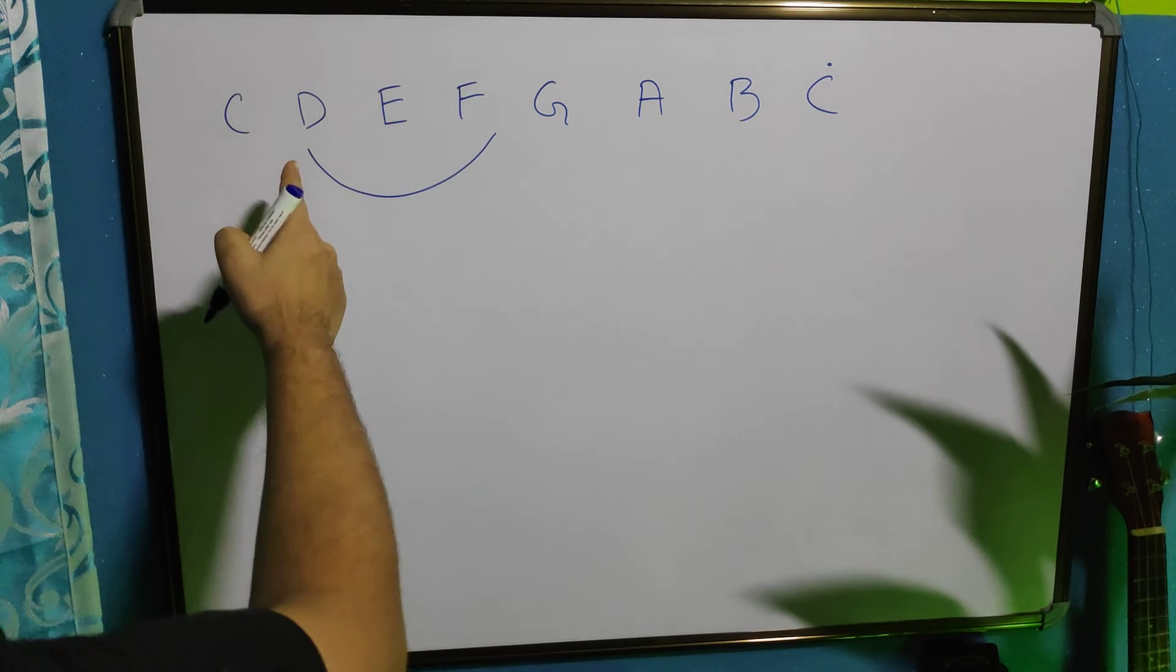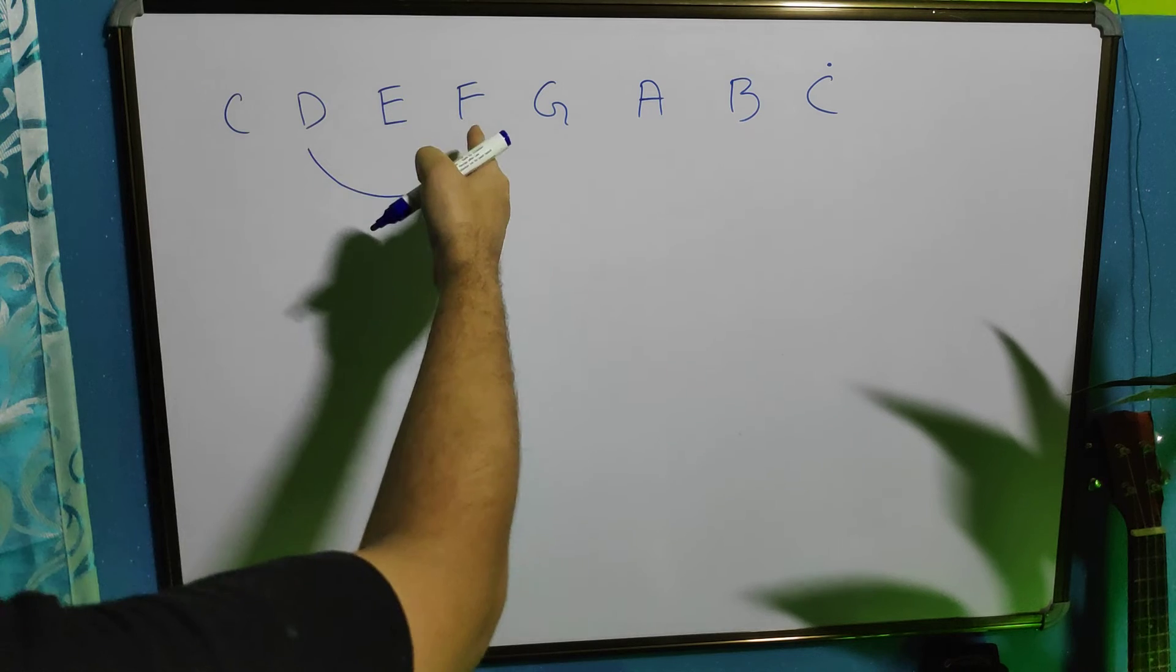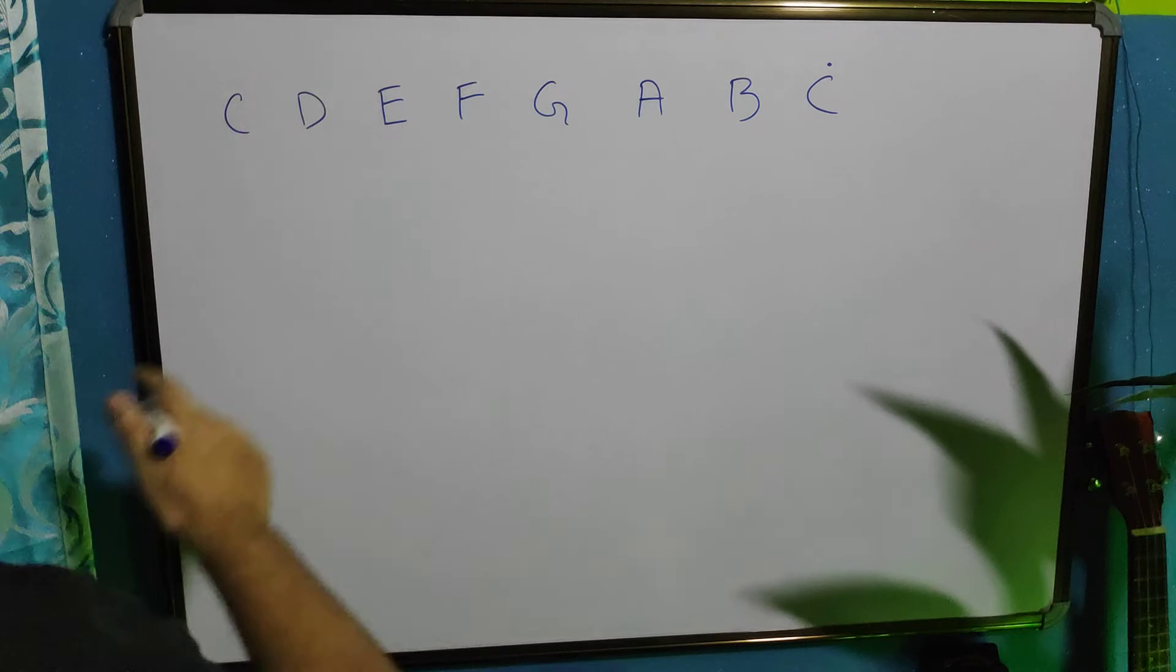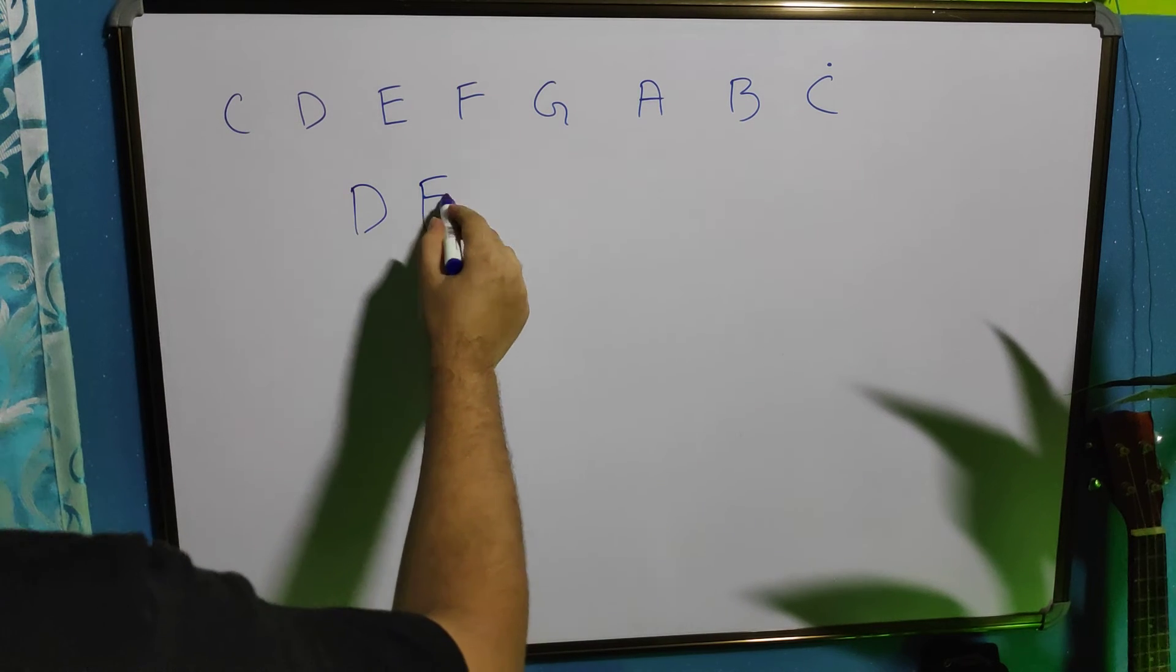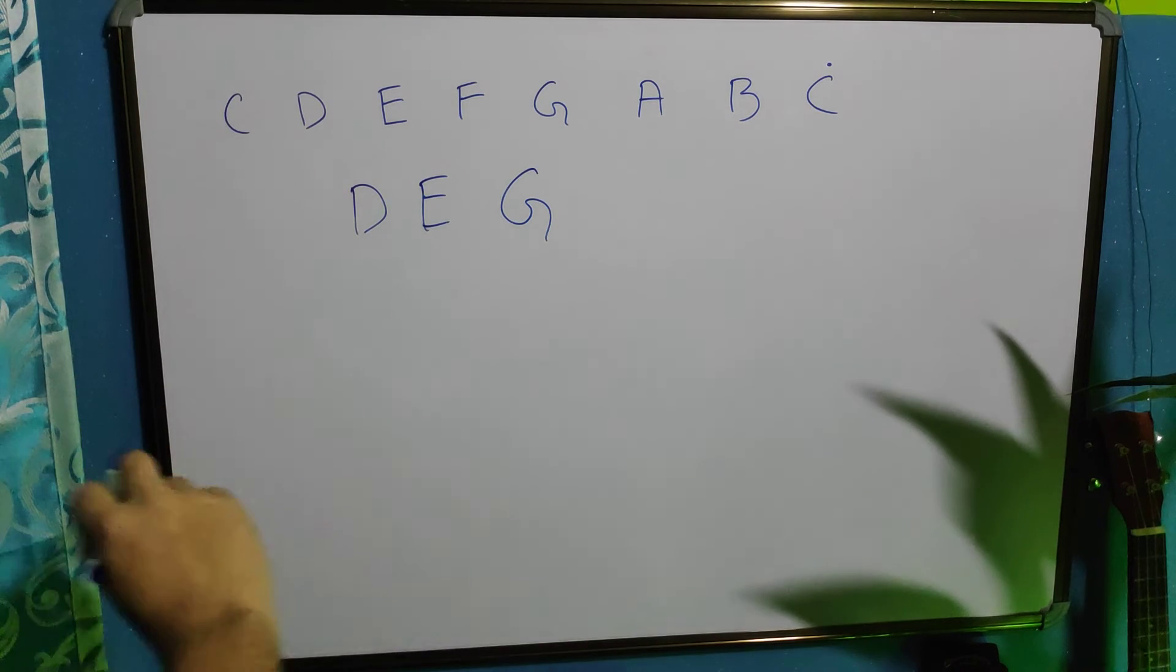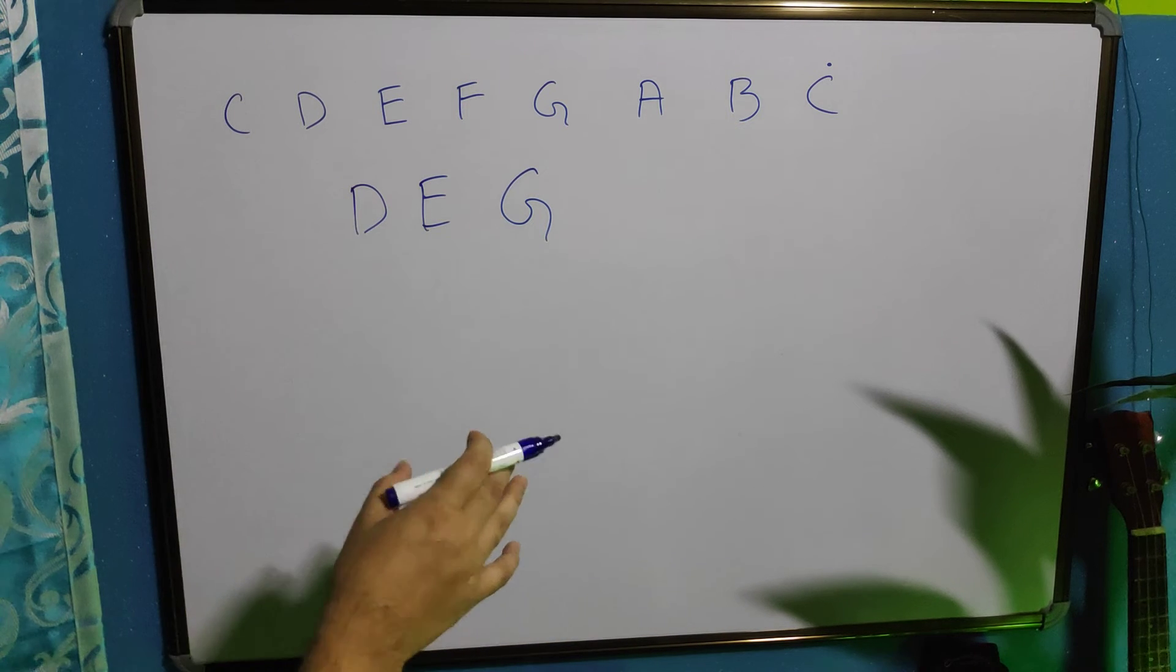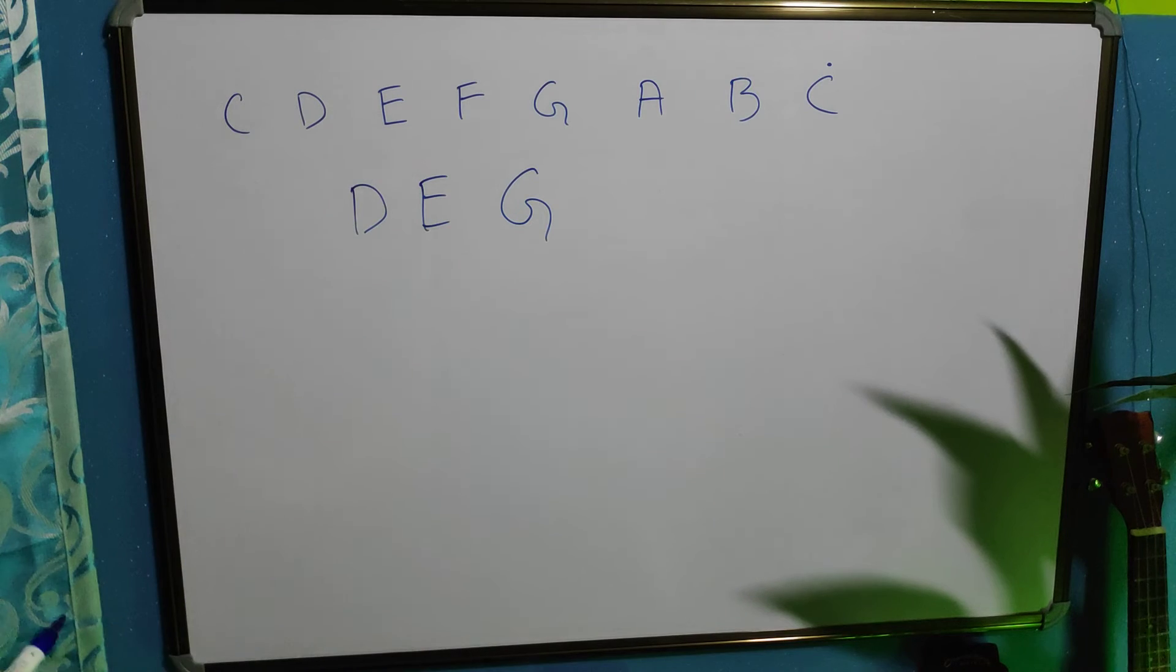But if we play, suppose if we play D, E, G, this is ascending to high but it is not consecutive notes because D, E, F is missing here. OK?